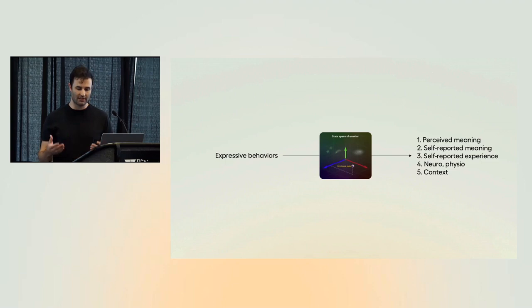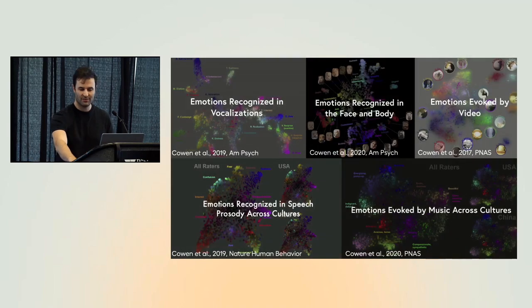So the task is really to characterize the latent metric space that explains the relationship between expressive behaviors and the phenomena they're purported to explain, which generally include perceived meaning, self-report, self-reported experience, physiological responses like heart rate, respiration, heart rate variability, and social context. What is the situation people are in? Are they giving a talk? Are they playing a sport? Are they having a conversation?